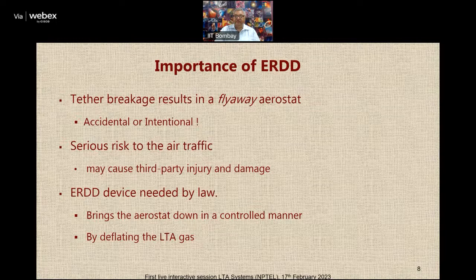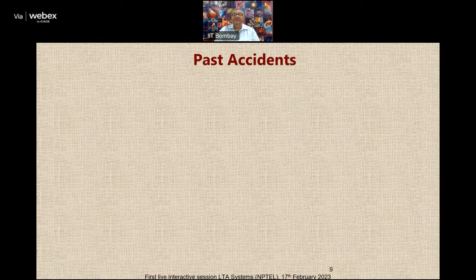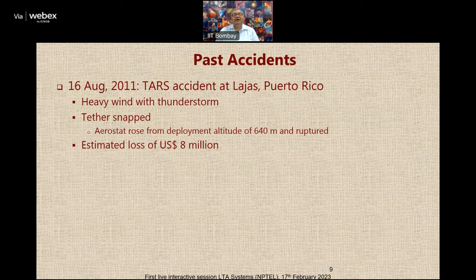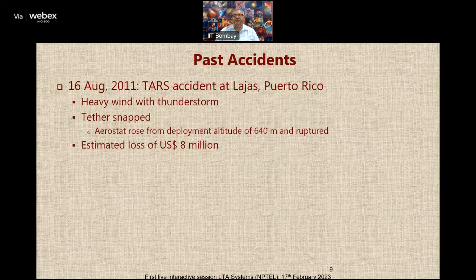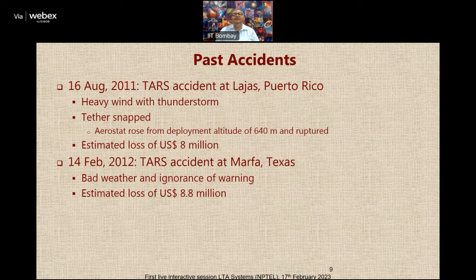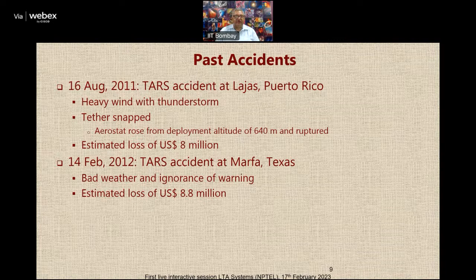What I am telling you is not just imagination — there have been many accidents in the past. For example, in 2011 in Lias, Puerto Rico, there was heavy wind with a thunderstorm which led to the snapping of the tether. The aerostat rose from ground altitude to 640 meters and then ruptured, leading to a loss of 8 million US dollars. Then in 2012 there was another accident of a tethered aerostat system in Marfa, Texas, USA. After investigation it was found that the operating agency should have taken care of the bad weather warning and brought the aerostat down safely — they ignored it, resulting in a loss of 8.8 million dollars.